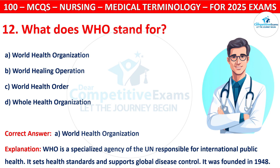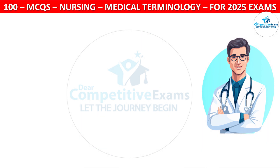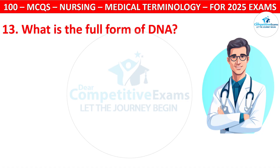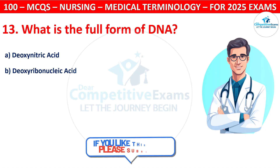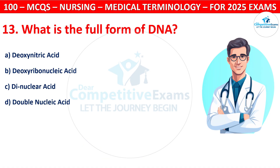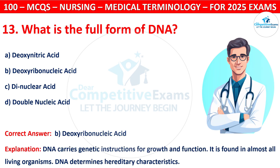Question 13: What is the full form of DNA? Options are: Deoxynetric Acid, Deoxyribonucleic Acid, Denuclear Acid, or Double Nucleic Acid. The correct answer is B, that is Deoxyribonucleic Acid. DNA carries genetic instructions for growth and function. It is found in almost all living organisms, and DNA determines hereditary characteristics.